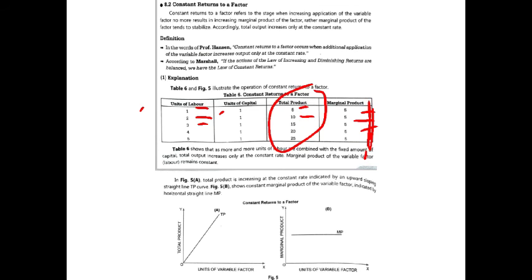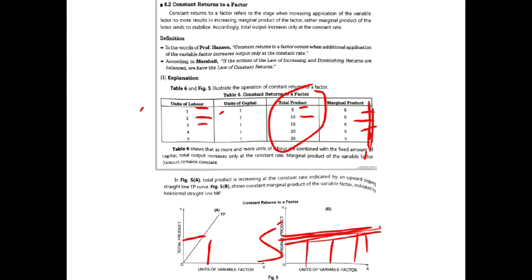In the diagram, total product increases at a constant rate, and the marginal product curve is constant — that is flat. Total product increases in the same ratio. Next is constant cost.